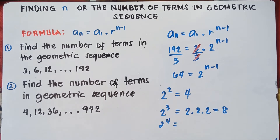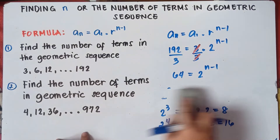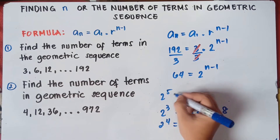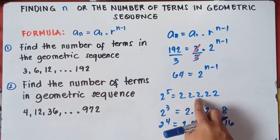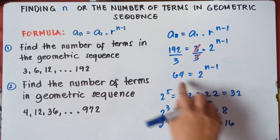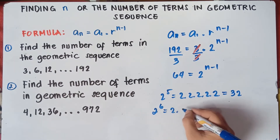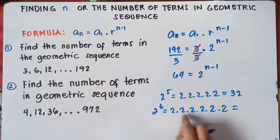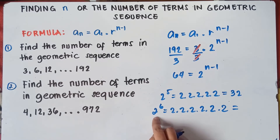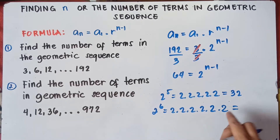2 raised to the power of 5 is 2 times 2 times 2 times 2 times 2 — that is 32. Let's try 2 raised to the power of 6: 2 times 2 times 2 times 2 times 2 times 2. So 2 times 2 is 4, times 2 is 8, times 2 is 16, times 2 is 32, times 2 is 64. Therefore, 64 equals 2 raised to the power of 6.